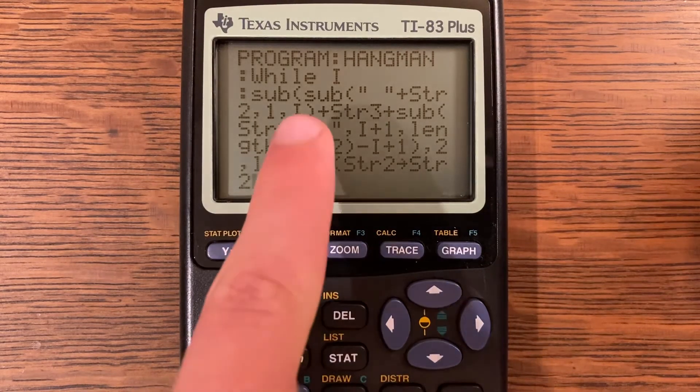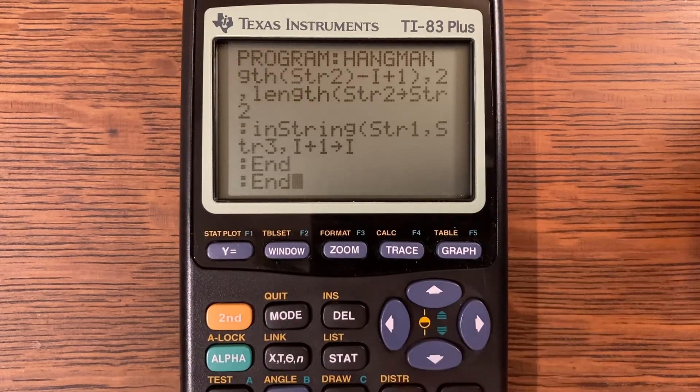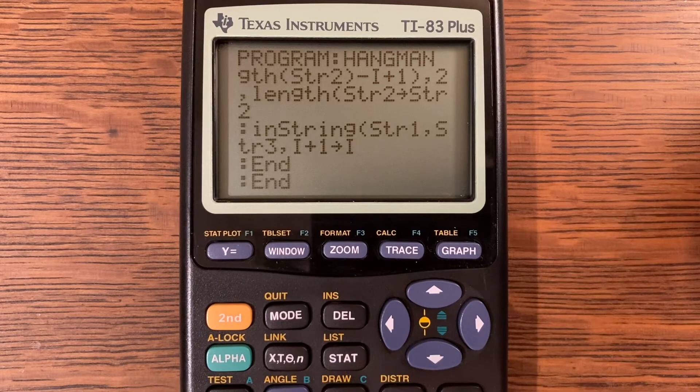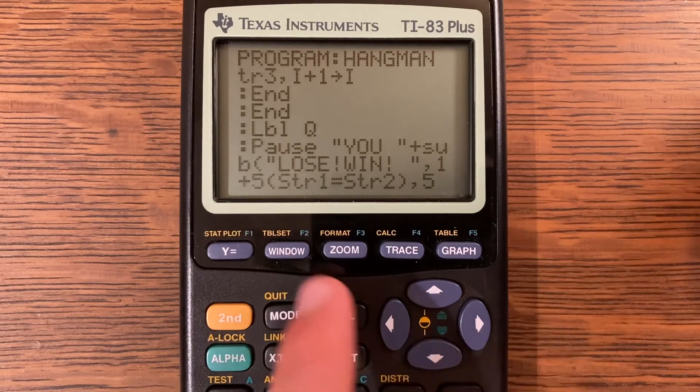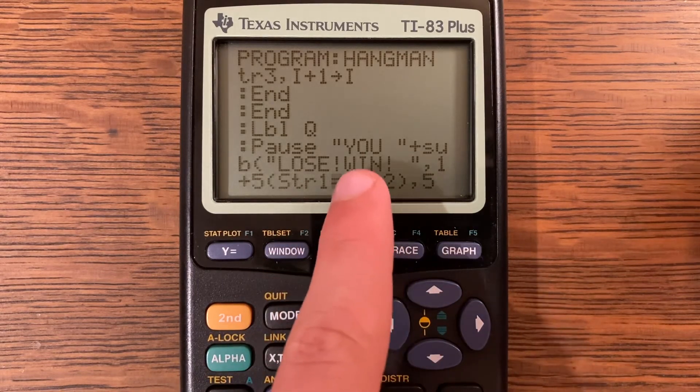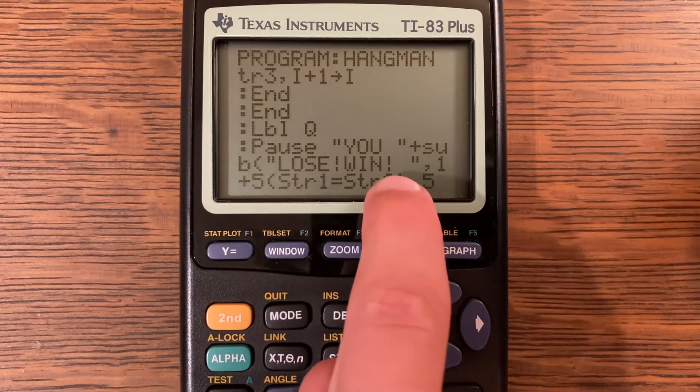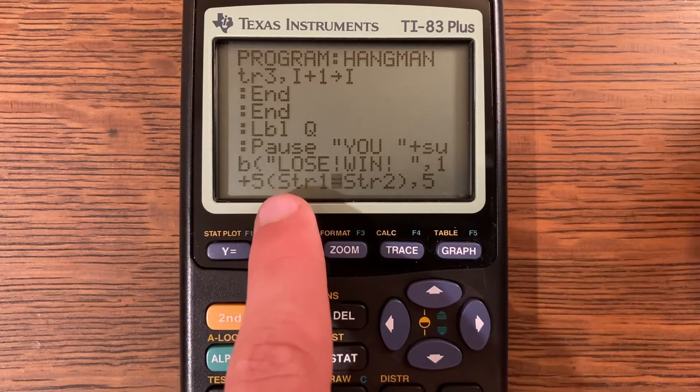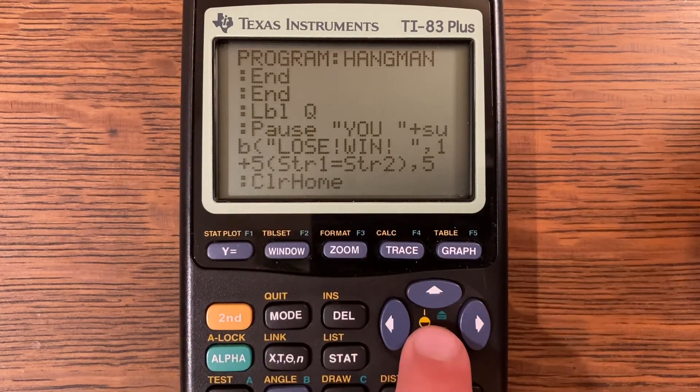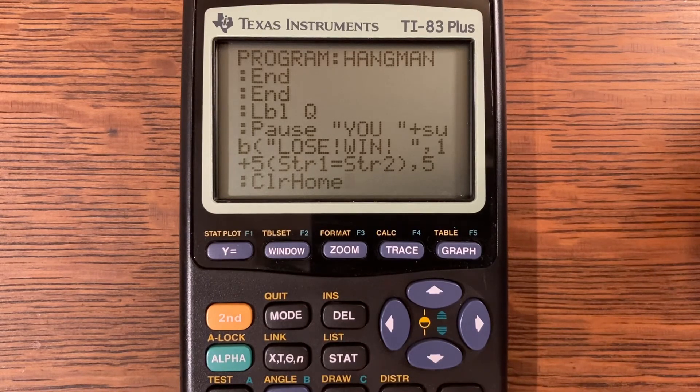In string string one comma string three comma i plus one store into i. And label q, pause quote u space plus sub lose win and then a space right there quote comma one plus five multiplied by string one is equal to string two comma five. Clear home, and that is the whole entire program for you to be able to play Hangman.